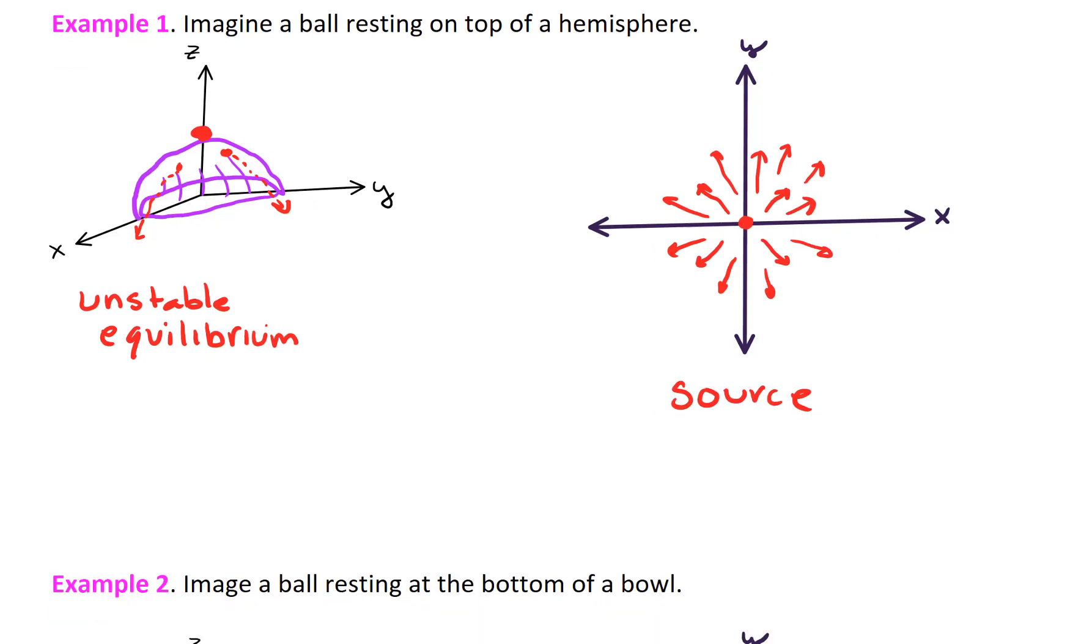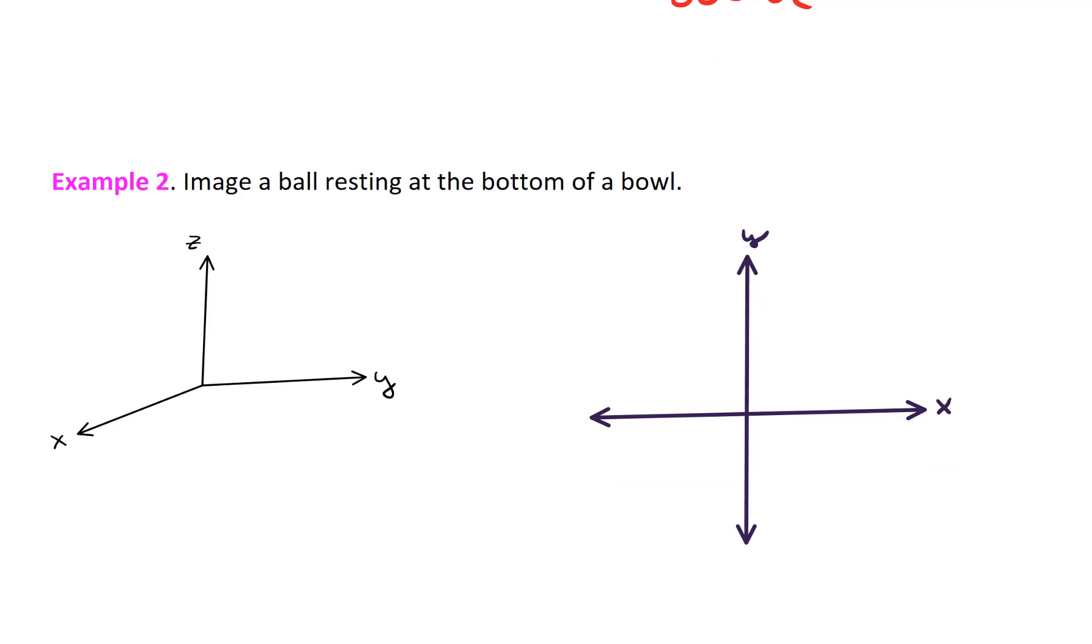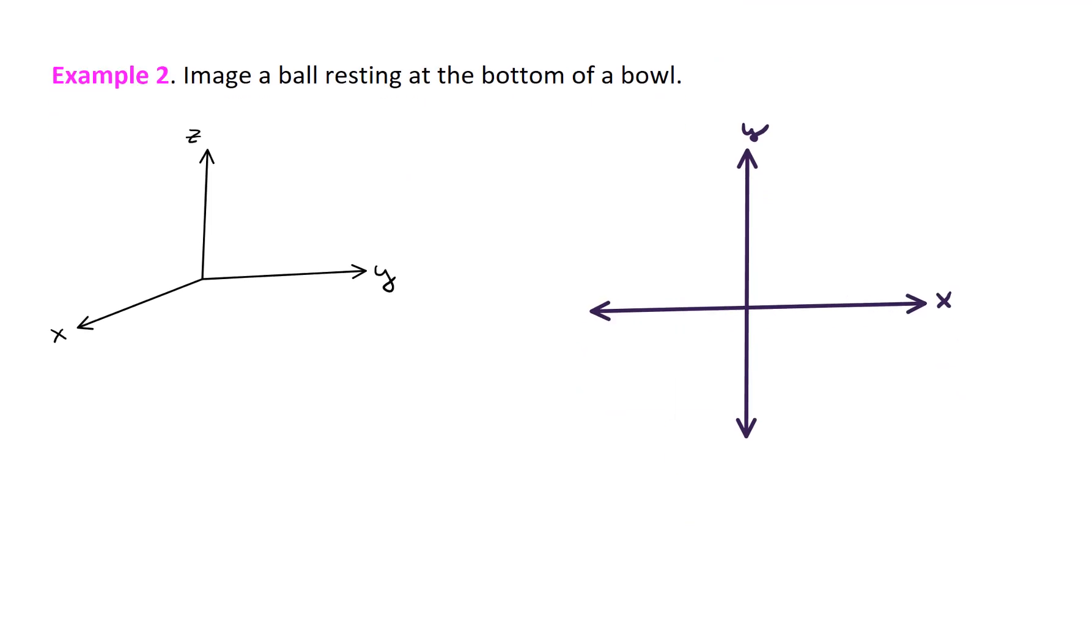This is unstable because the direction of flow is outward. Let's take a look at a different example. In this example, let's imagine a ball resting at the bottom of a bowl. So this time, let's draw a bowl. Okay, and here's our ball sitting at the bottom of that bowl. This is also an equilibrium, but this is actually a stable equilibrium. Because if I nudge the ball a little bit in any direction, the ball will return to rest. So if I put the ball up here, the ball is going to move back down to its resting position.